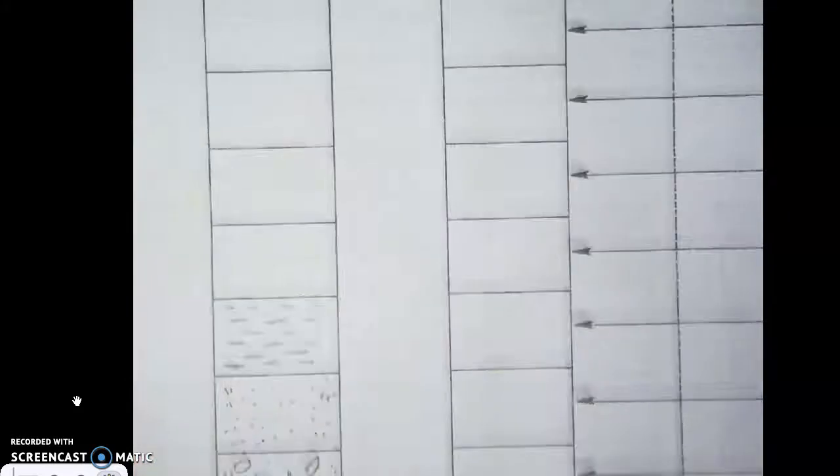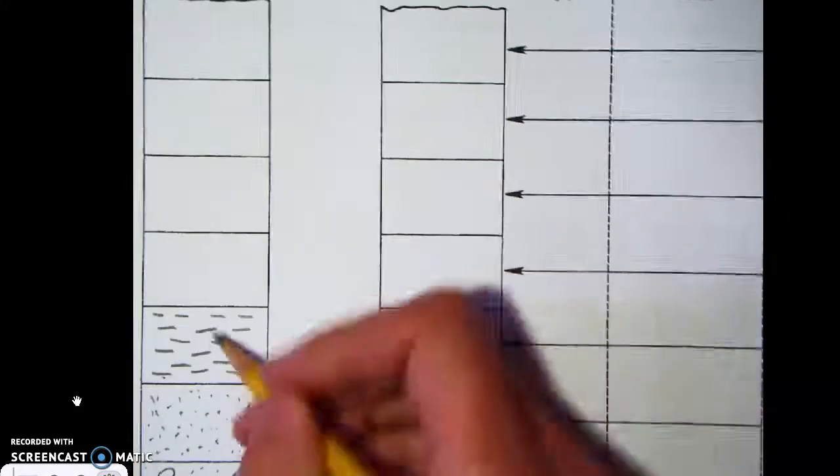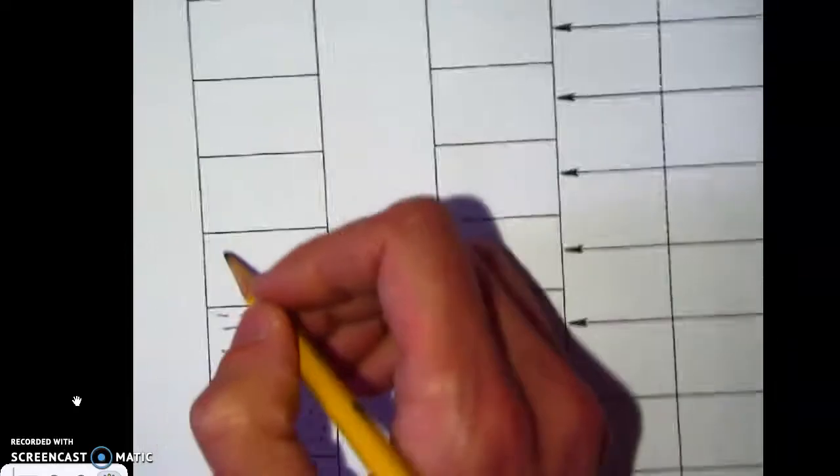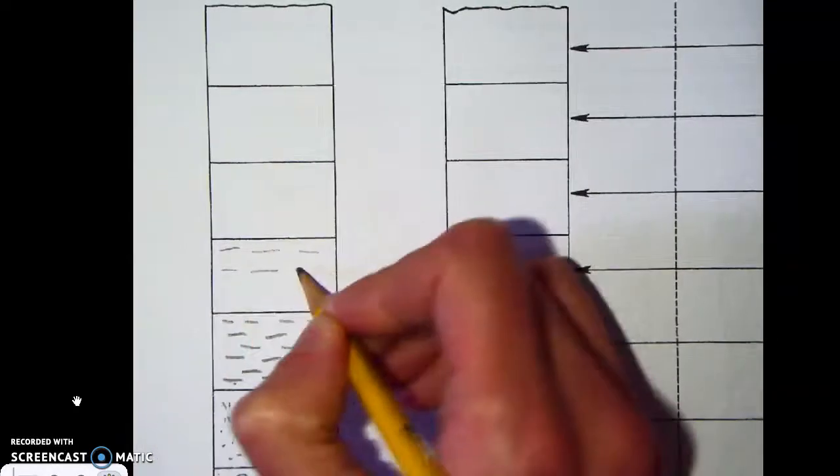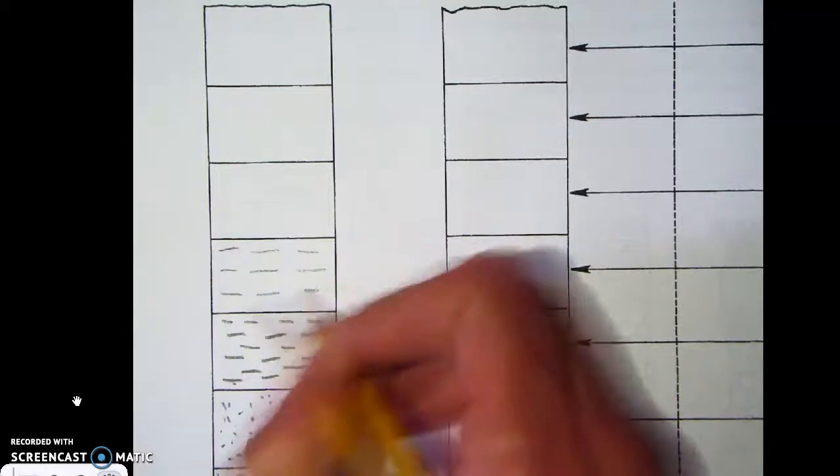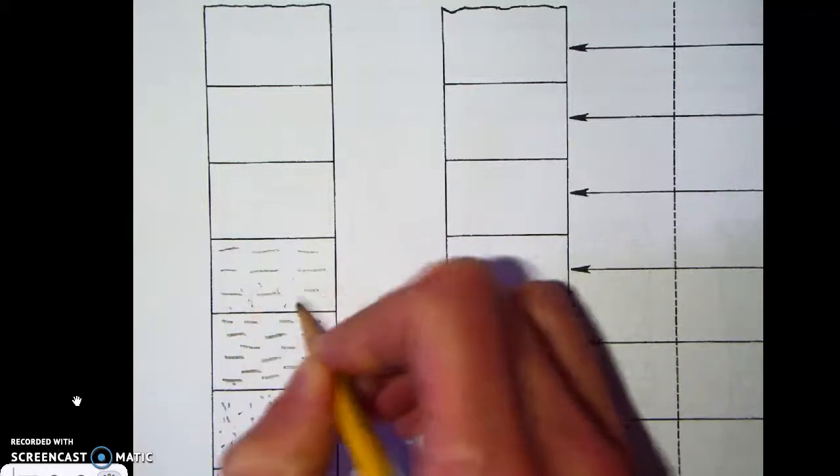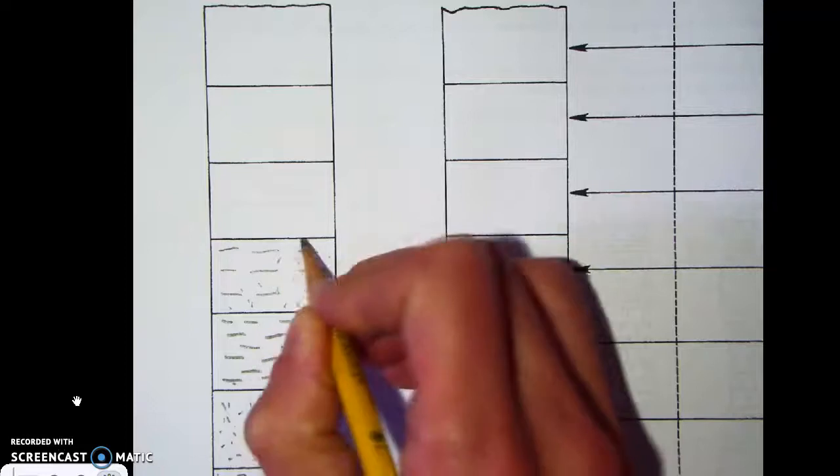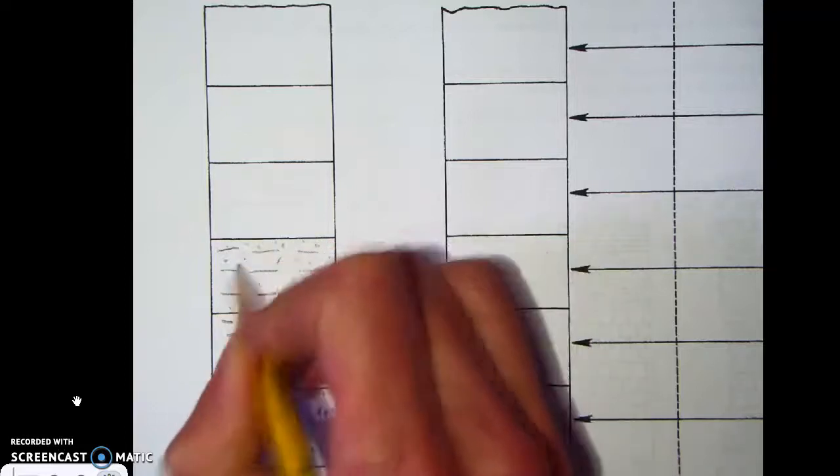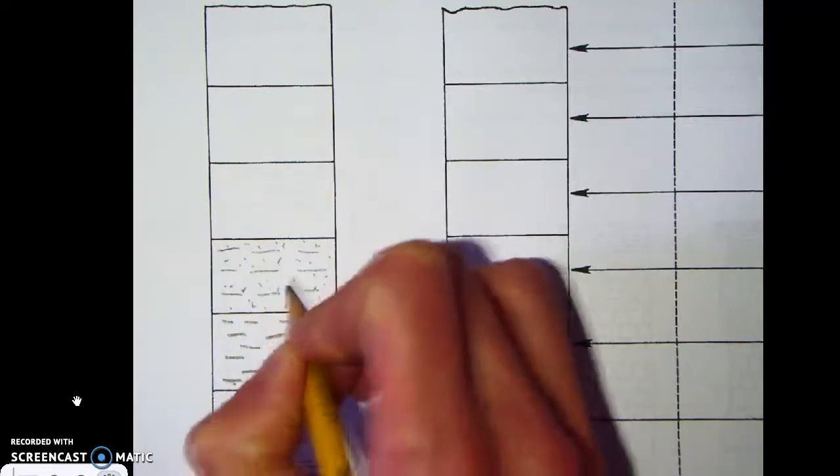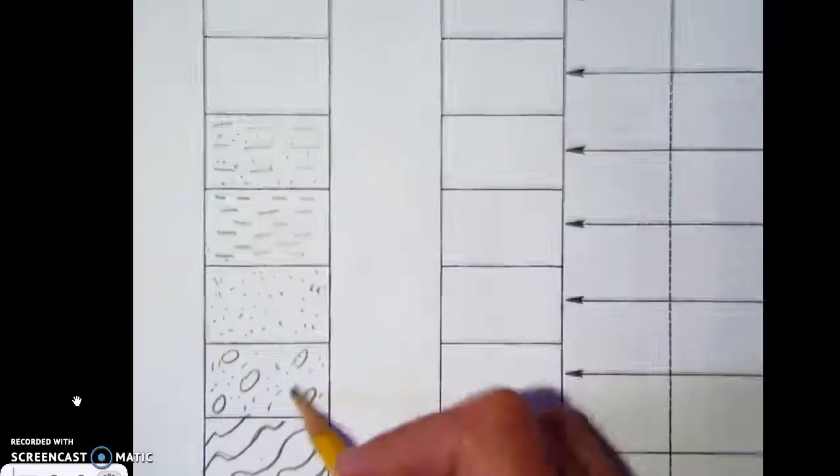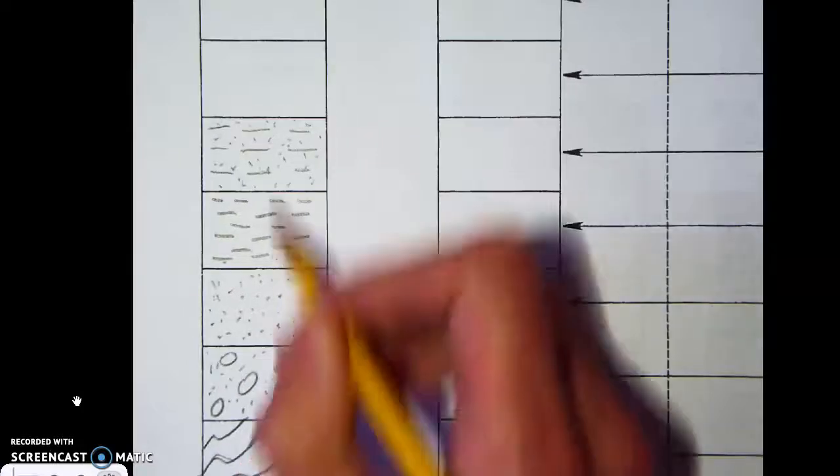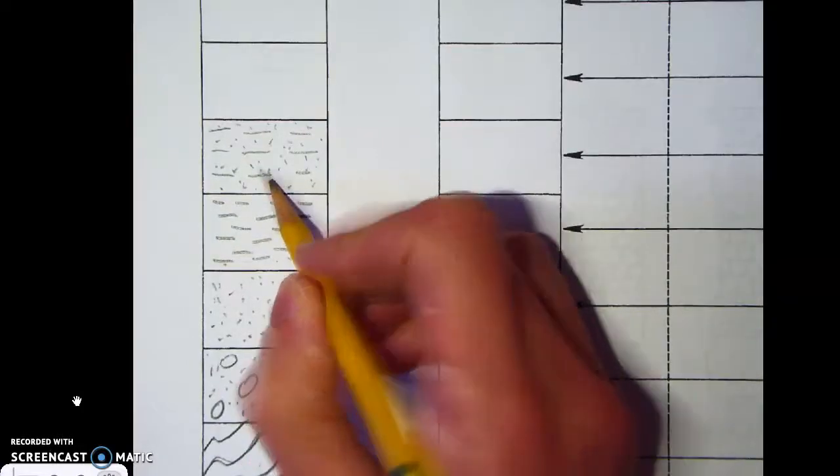So anyway now we'll go ahead and we'll draw the symbol for a siltstone which is going to be similar to the shale but we're going to have little dots in between. Okay so now we've got our gneiss, our conglomerate, our sandstone, our shale and our layer of siltstone.